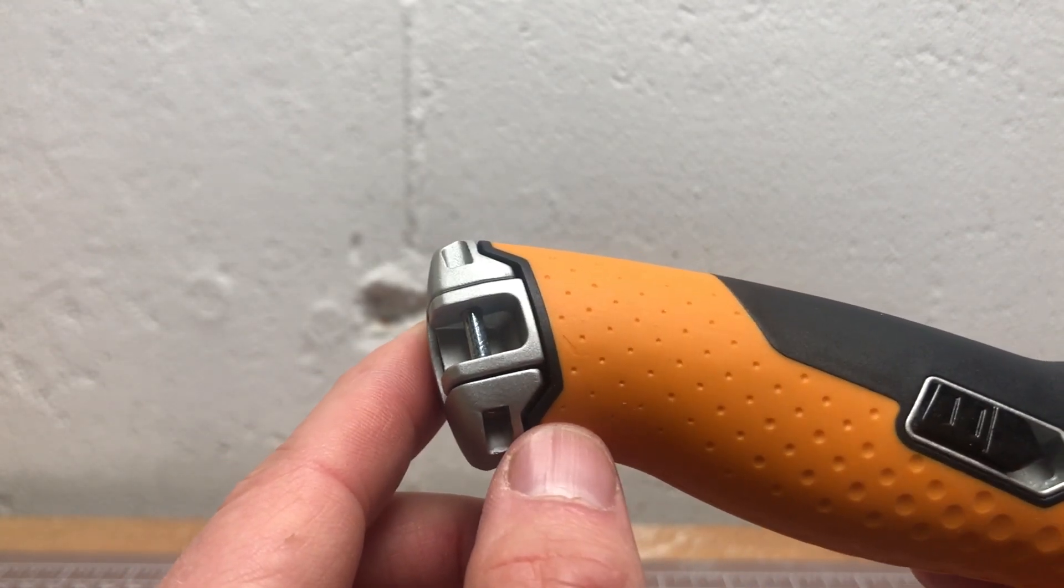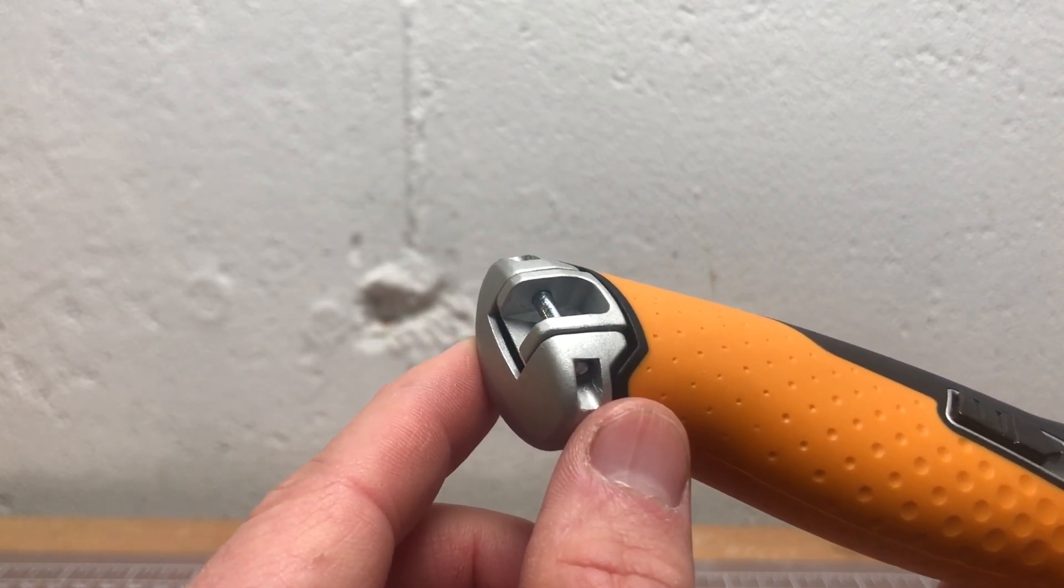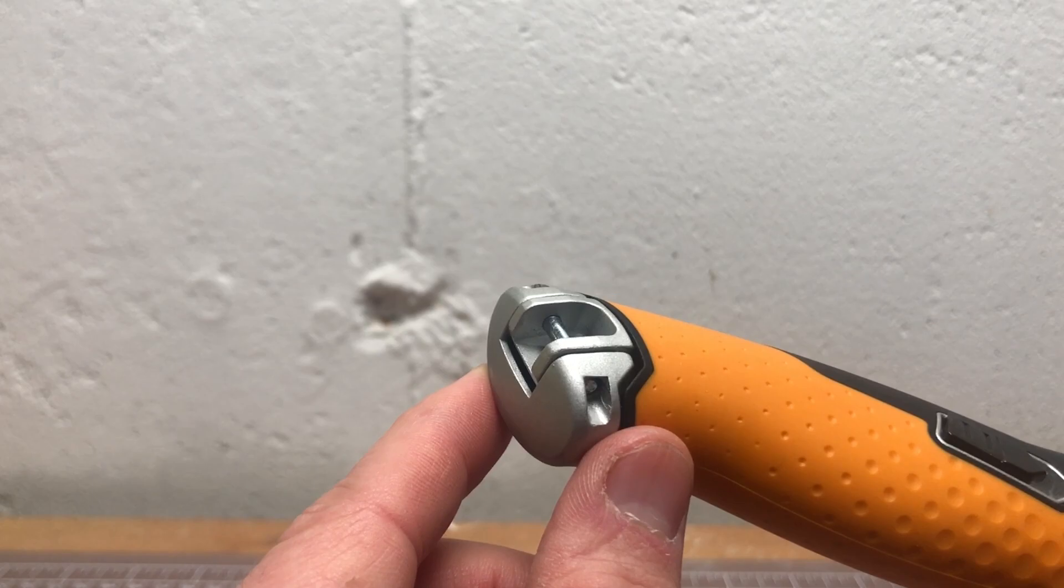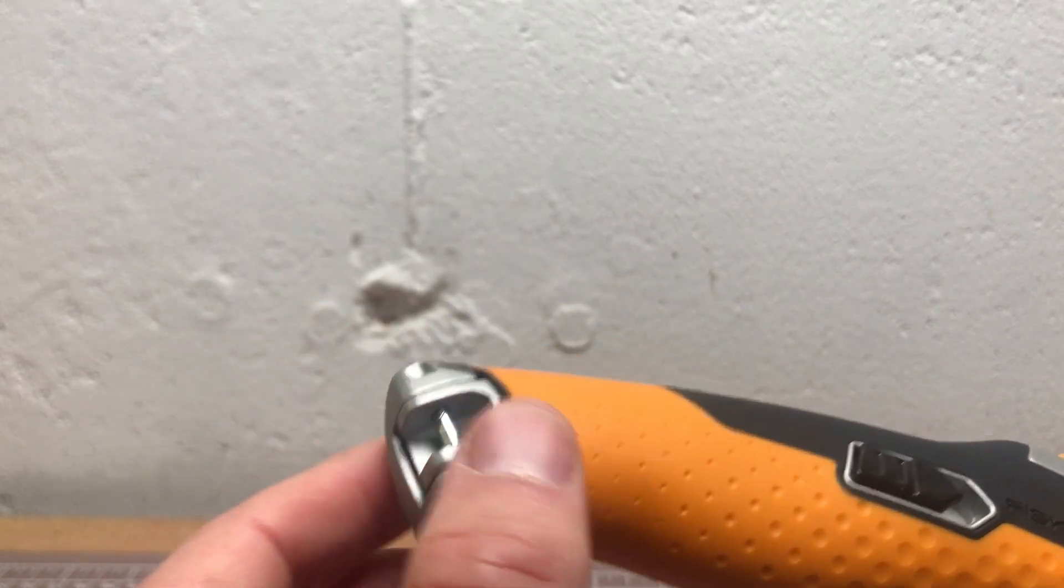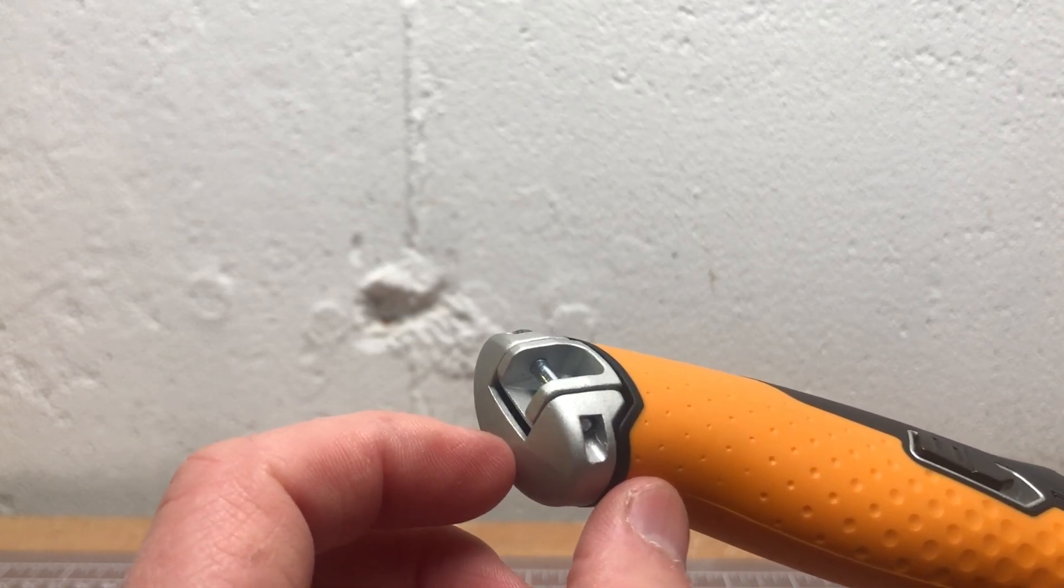There's a little metal bar here for a lanyard if you want to hang this from a toolbox or hang it from your work belt, or just hang it from your jacket or from your wrist. If you're on a ladder maybe you want to have it on wrist. They have this. There's no lanyard included, so you're gonna have to make it yourself.